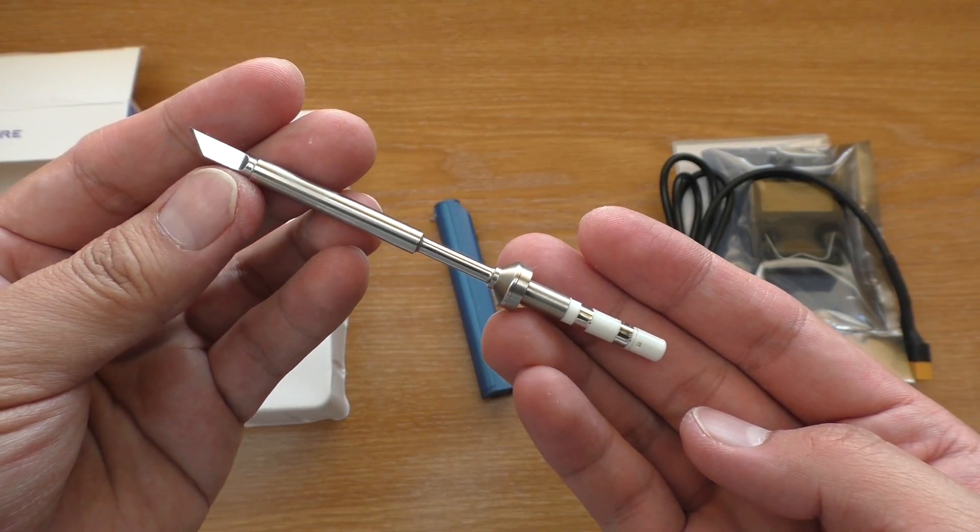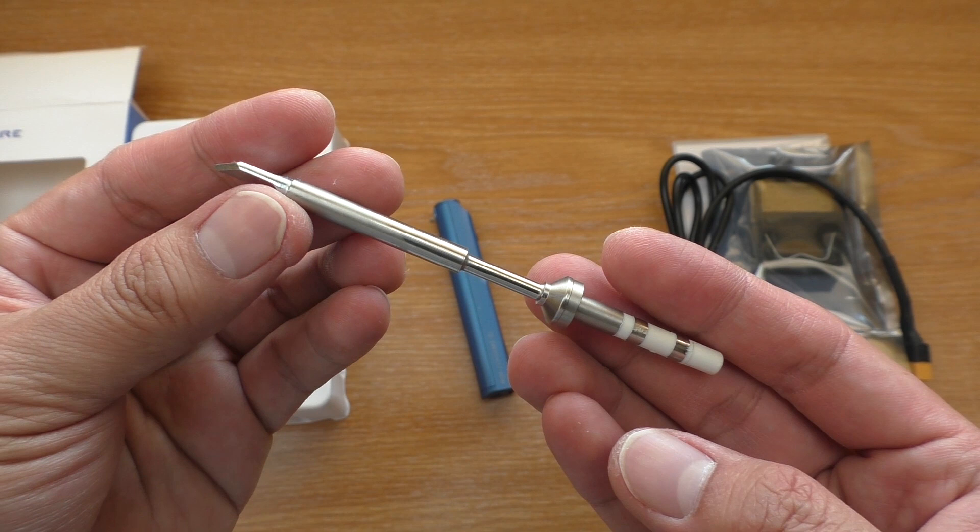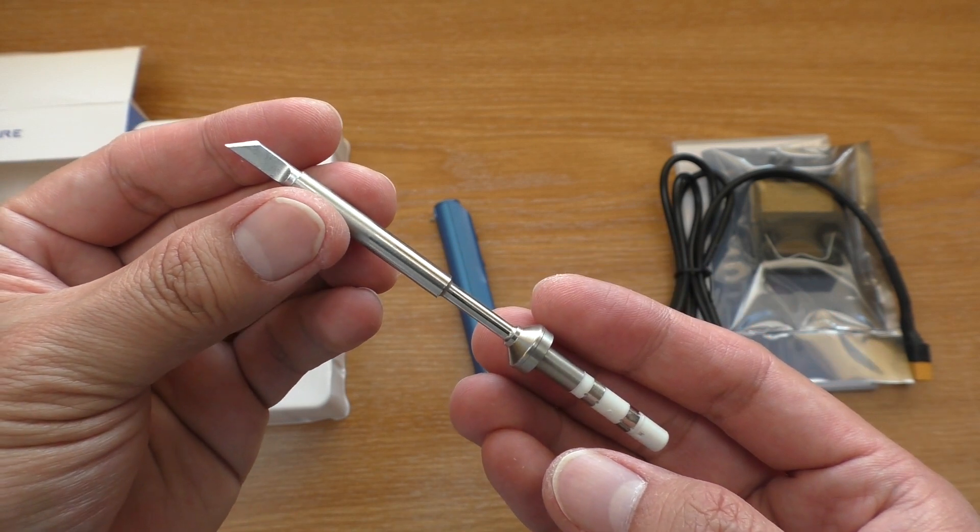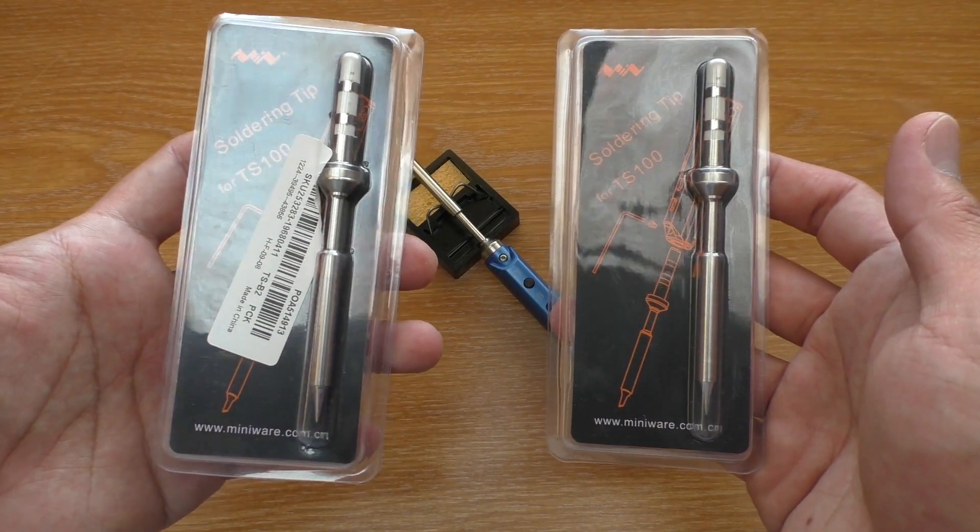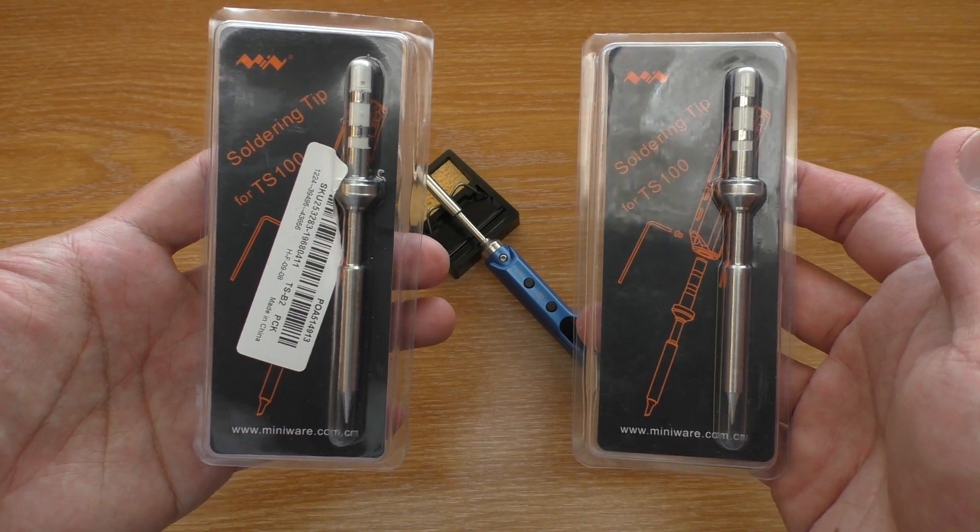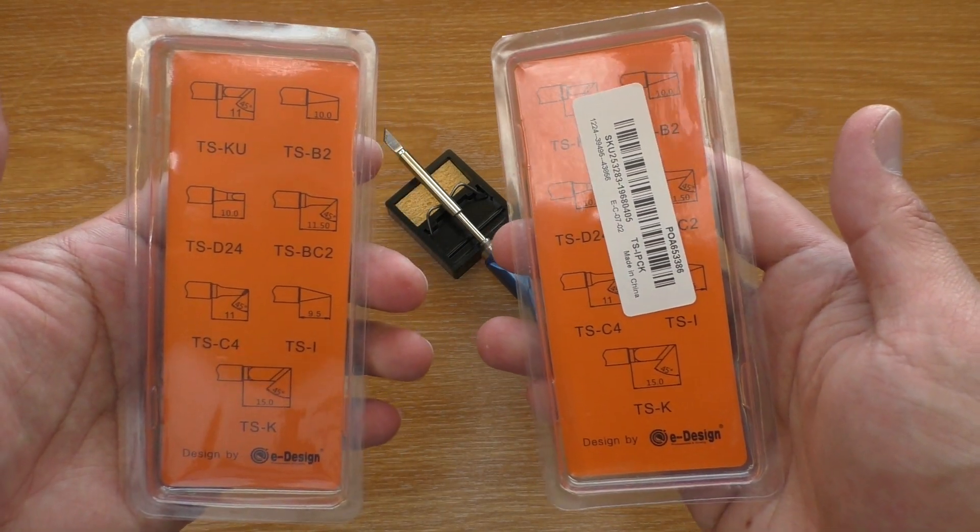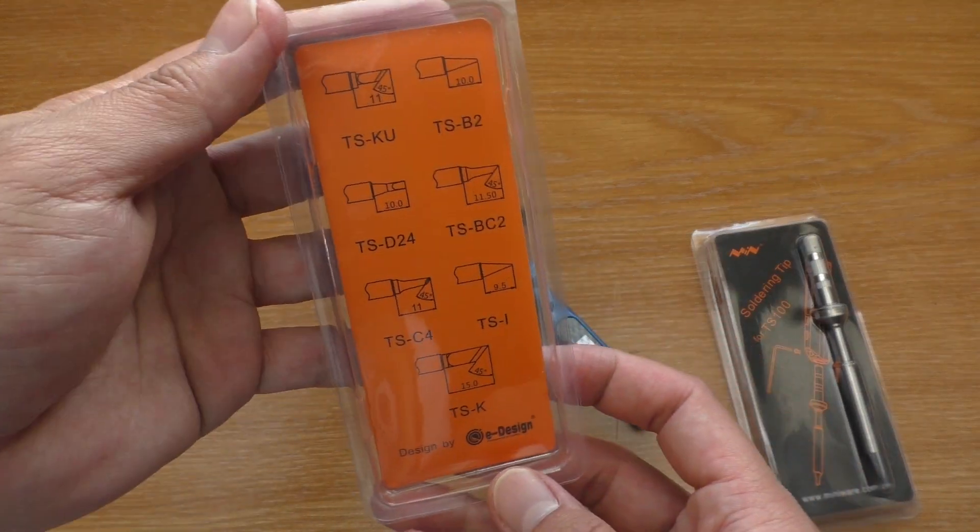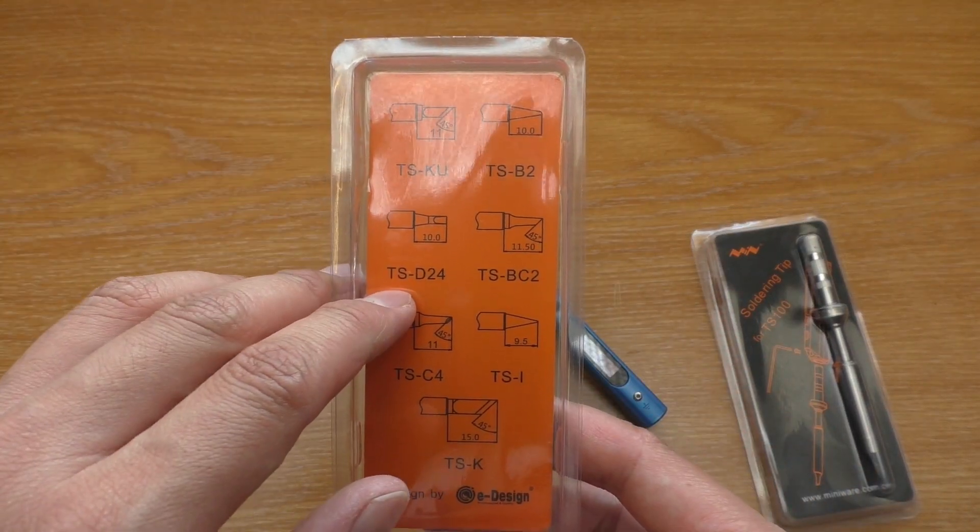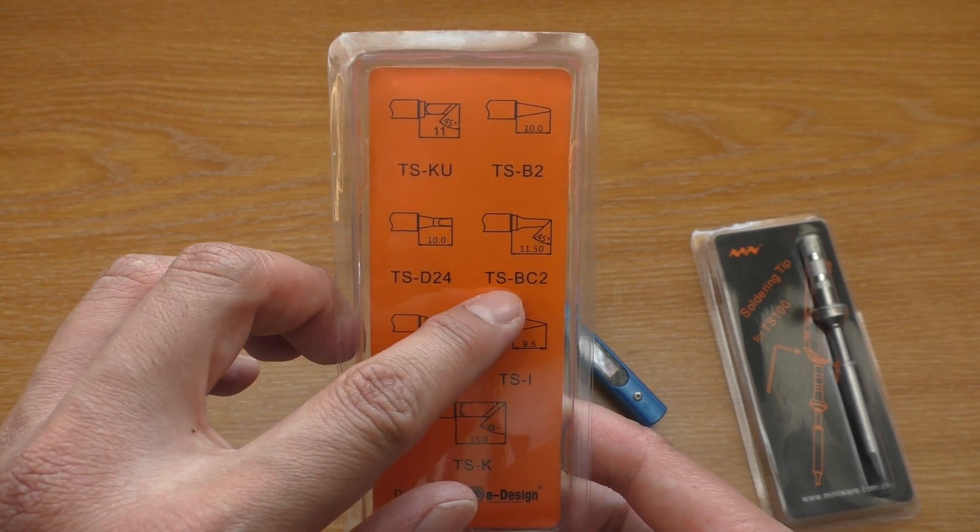Next is the tip. This is knife tip which is pretty useful but I don't use it very much. Fortunately it is interchangeable so you can choose the tip according to the job you are going to do. Here I have conical tips to use because I am more familiar with this type. There are also chisel and concave which are very useful.